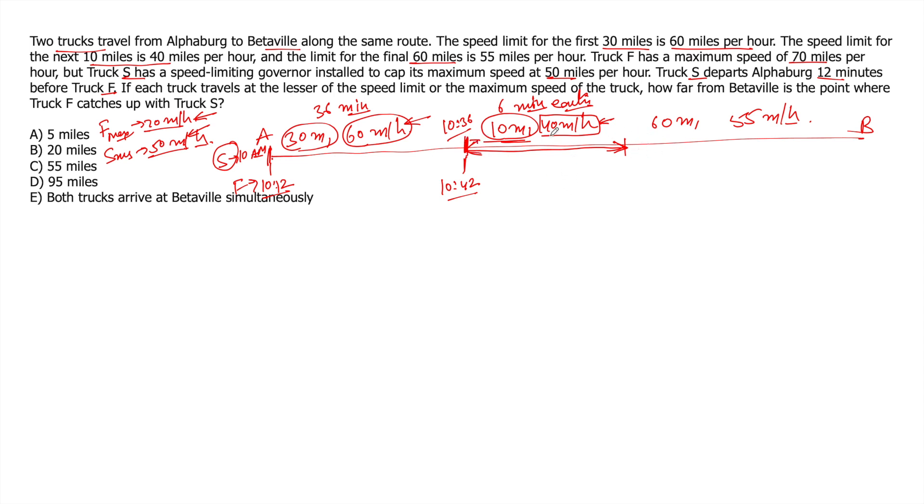Now, what it means is S will reach this point six minutes earlier. That means by the time F reaches this point, S has already traveled for six minutes. So let's take this separately. The 60 miles we are talking about when F reaches this point, when F enters this zone.